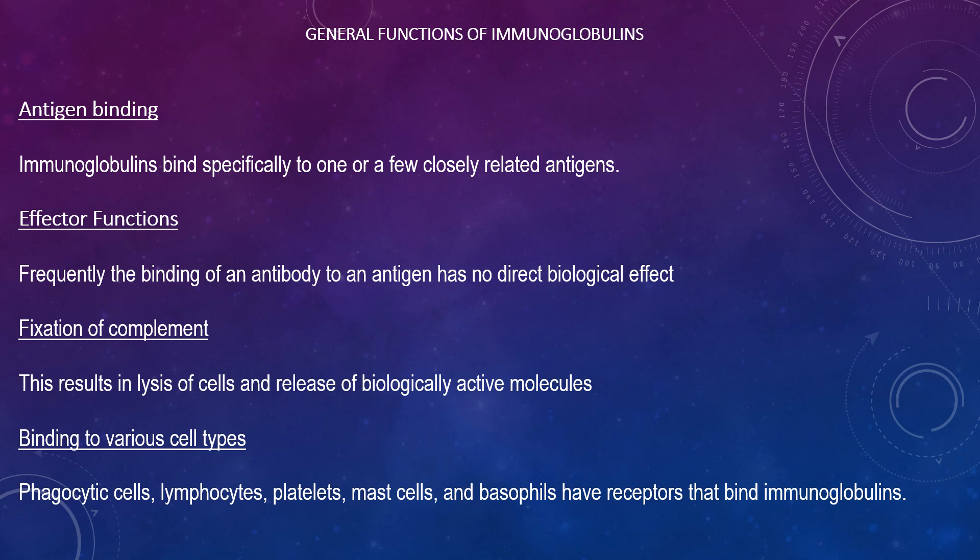Such effector functions include fixation of complement, which results in lysis of cells and release of biologically active molecules, and binding to various cell types such as phagocytic cells, lymphocytes, platelets, mast cells, and basophils, which have receptors that bind to immunoglobulins. This binding can activate cells to perform some function. Some immunoglobulins also bind to receptors on placental trophoblasts, which mediates transfer of immunoglobulin across the placenta. As a result, maternal antibodies provide immunity to the newborn.